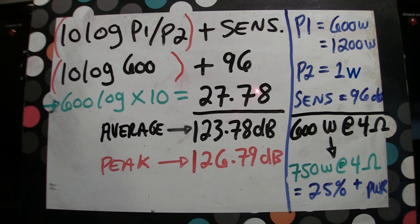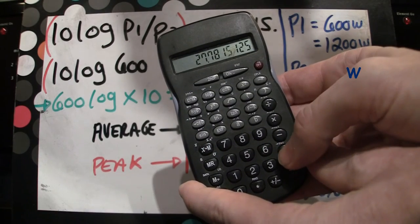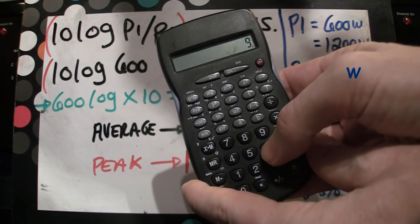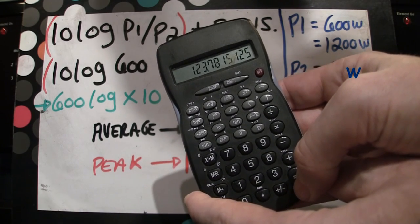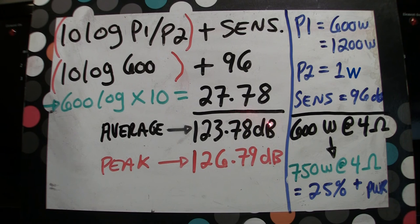Once you get 27.78 by going 10 log 600 or 600 log times 10, you add 96. You add the sensitivity to it and you end up with an average speaker decibel sound pressure level of 123.78 decibels. So that's pretty good for a club. That's a lot of headroom for a club. Your peak power calculated is going to be 126.79 dB.